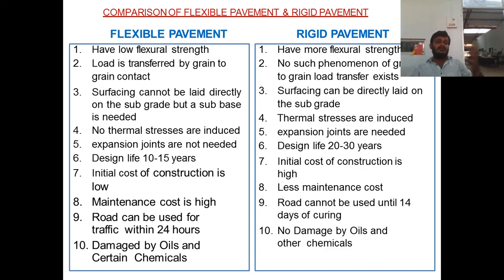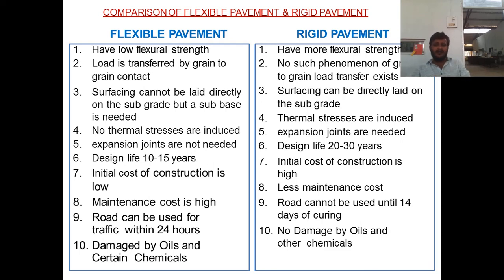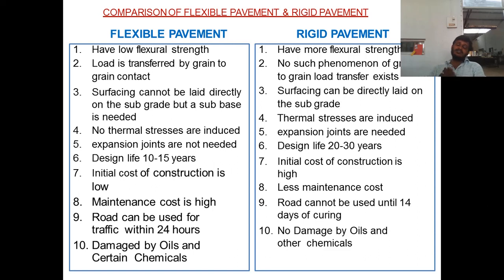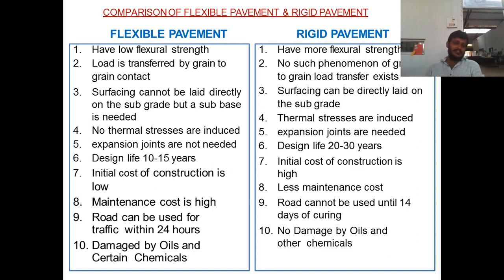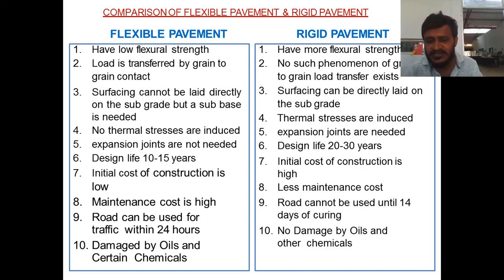A flexible pavement road may be used by traffic within 24 hours of construction. For rigid pavement, the road cannot be used for at least 14 days of curing, since it is made of concrete. Flexible pavement is damaged by oils and certain chemicals, whereas no such damage occurs with rigid pavement. Those are the major differences between flexible and rigid pavement.